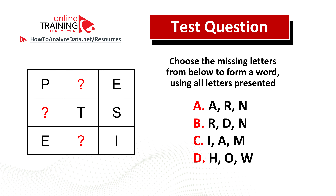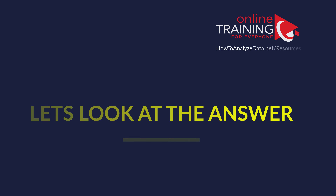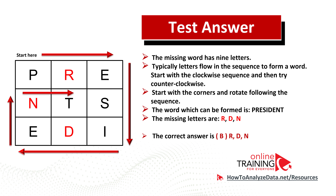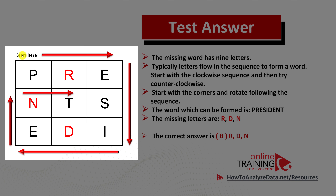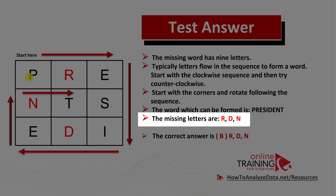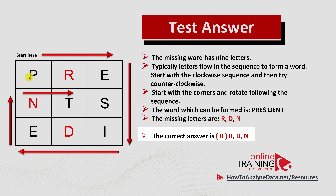Now might be a good time to pause this video to see if you can come up with the solution on your own. Based on the question, the word has nine letters. Letters in the sequence flow to form a word. Start in the upper left corner, flow left to right, then top to bottom, then right to left and into the middle row — you'll see that the word PRESIDENT can be formed. The missing letters are R-D-M, so the correct choice is choice B.